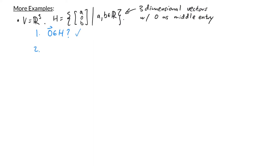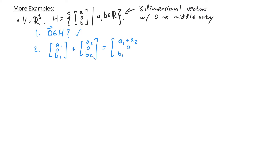For the second condition, we want to check that H is closed under vector addition. Start with two arbitrary vectors in H: (A₁, 0, B₁) and (A₂, 0, B₂). Their sum is (A₁ + A₂, 0, B₁ + B₂). Since the resulting vector has a zero in the middle entry, the sum is in H, which tells us that H is closed under addition.